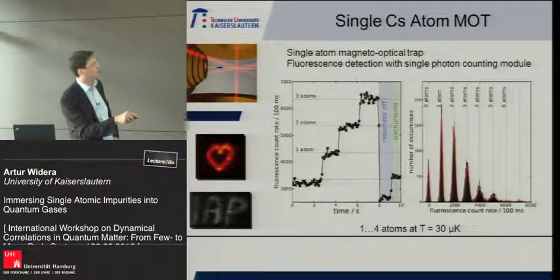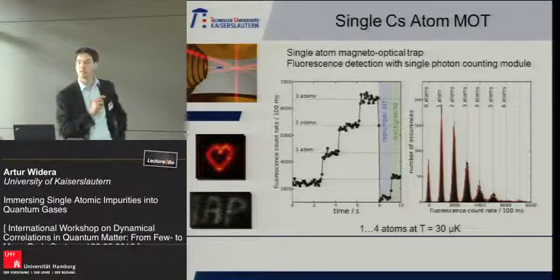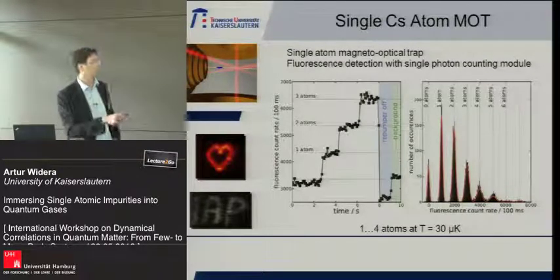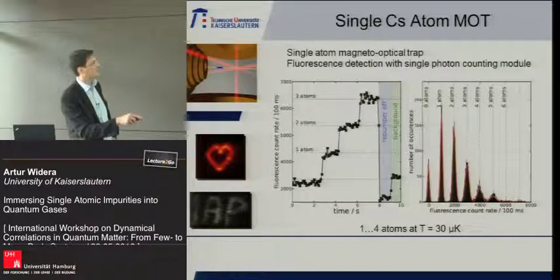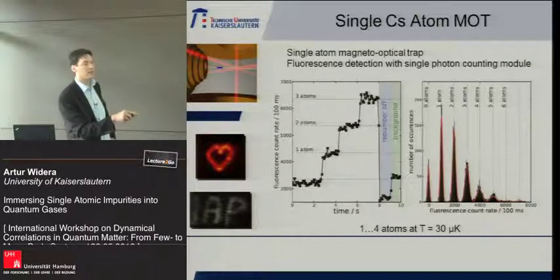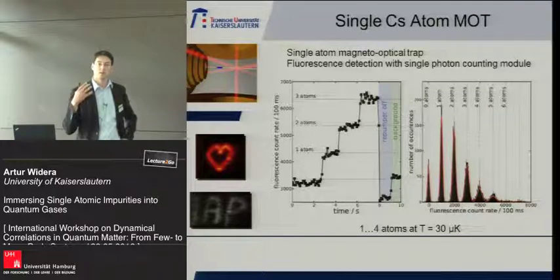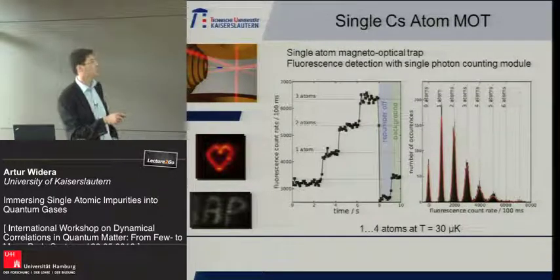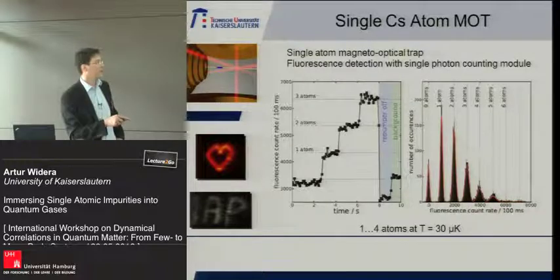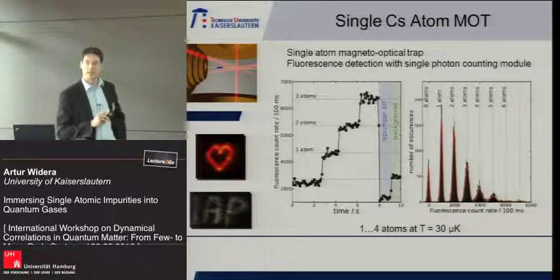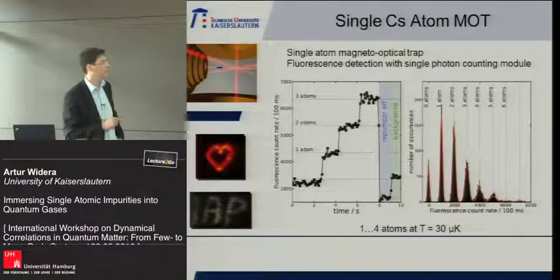These different peaks are well separated, so we can easily distinguish single or two atoms in our MOT. The loading statistics is Poissonian, meaning we cannot load exactly one atom, but we can post-select events where one atom is loaded. Typical temperatures here are 30 microkelvin.